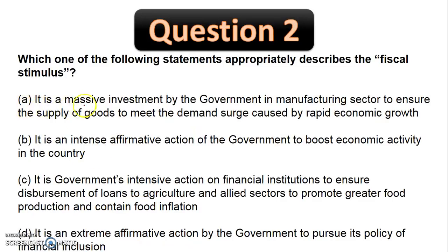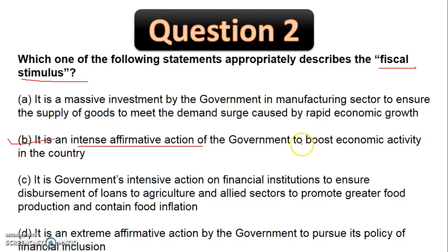Next question: which statement appropriately describes fiscal stimulus? Whenever the economy of a country goes sluggish — meaning a slowdown, recession, or depression — according to John Maynard Keynes (also called Keynesian economics), the government has to spend money to increase growth in the market. The right answer is: fiscal stimulus is an intense affirmative action where the government spends money to boost economic activity in the country, leading to consumption and spending in the market.